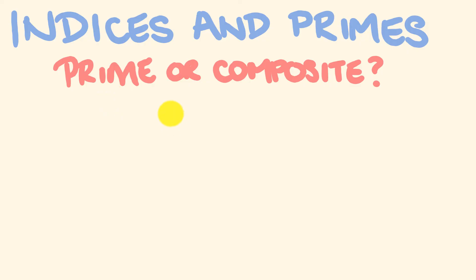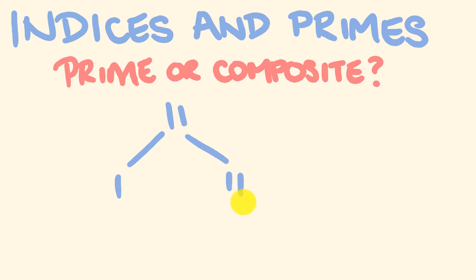So let's have a look at a couple of examples. Are these following numbers prime or composite? The first number is 11. Is it a prime number or a composite number? What factors does 11 have? 11 has the factors 1 and 11. Because it only has two factors, 11 is a prime number.